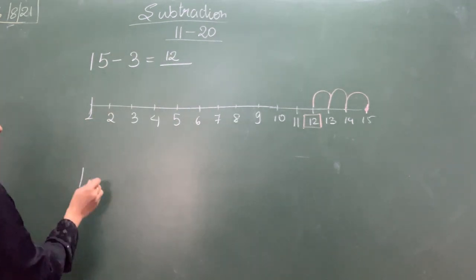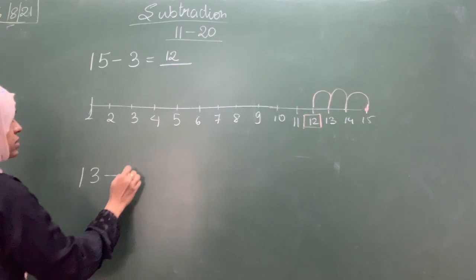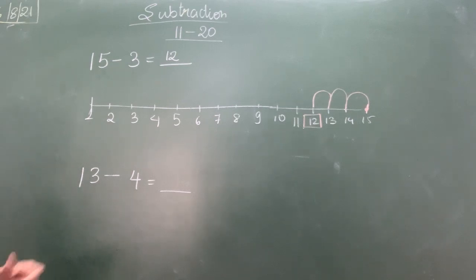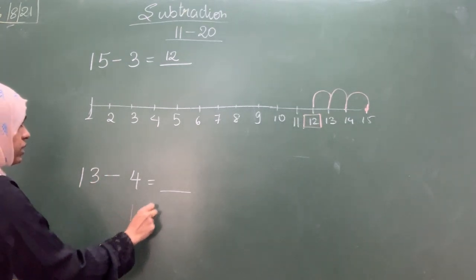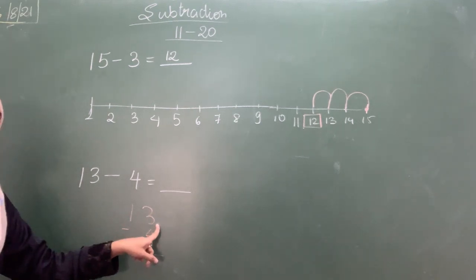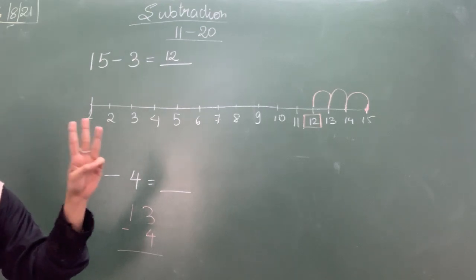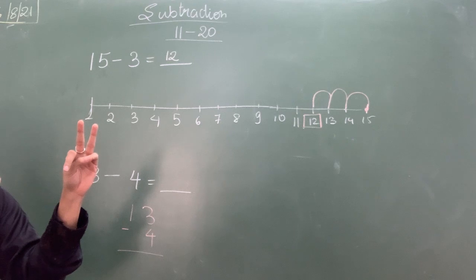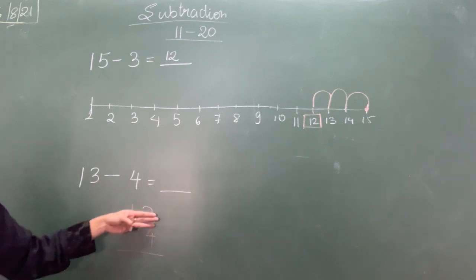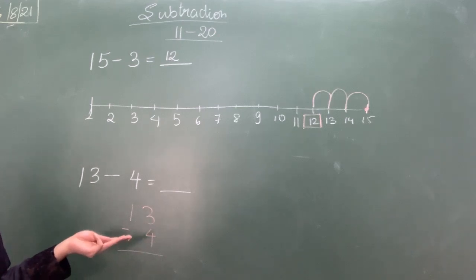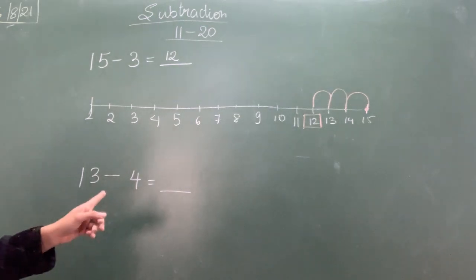Suppose I will take 13 minus 4. What will be my answer? Now this 13 minus 4 I cannot do it vertically. Because here it is small number. From 3, can you cut 4? No. There is 3. If there is 1, I could have done it. If there is 2, I could have done it. If there is 3, I could have cut. 4 cannot be cut. So for this vertical is not possible. In this, the next step is borrowing, which we will learn afterwards, not in this session. So for this we can do it only on number line.